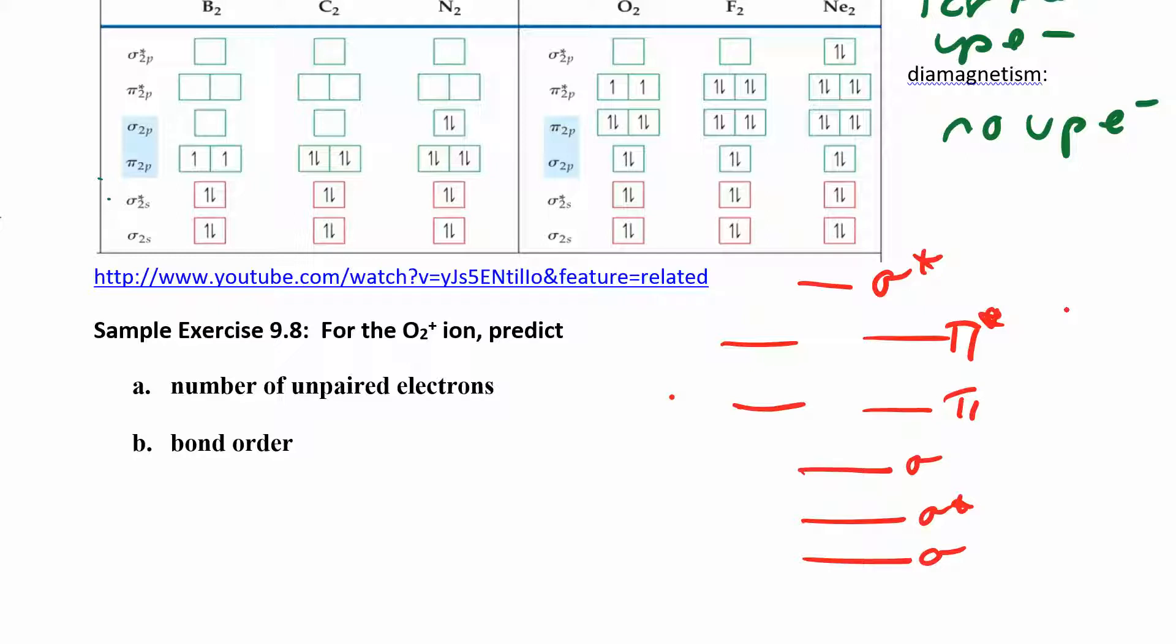Now for O2 plus: oxygen has 6 electrons, times 2 gives 12, and the plus means I lost one, so I need 11 electrons. So I have 2, 4, 6, 7, 8, 9, 10, 11. From this orbital diagram, I can tell I have one unpaired electron right here. Remember to half-fill everything before you pair.